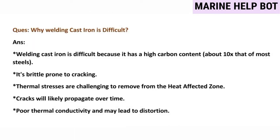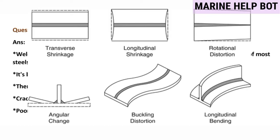Welding cast iron is difficult because it has a high carbon content, which makes it brittle in nature and prone to cracking — it easily cracks due to the heat generated during welding. Thermal stresses are challenging to remove from the heat affected zone, and cracks will likely propagate over time. Additionally, its poor thermal conductivity may lead to distortion.